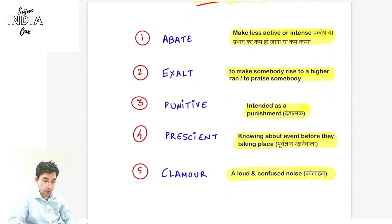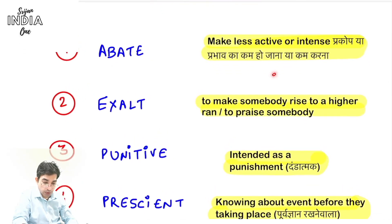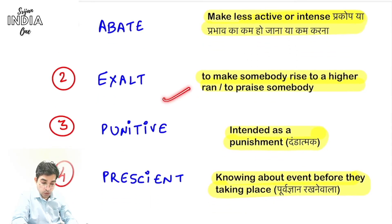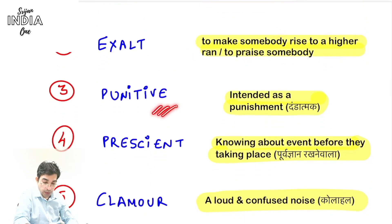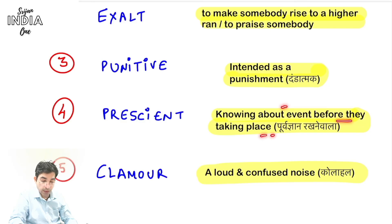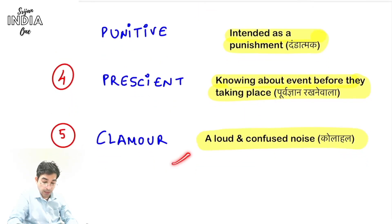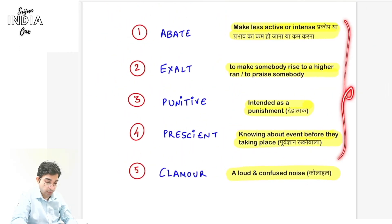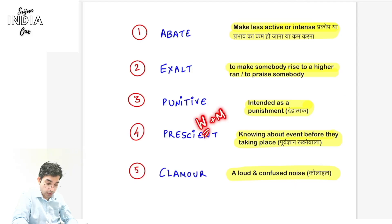Today's vocabulary: 'Abate' means to reduce the effect or intensity of something bad — make less active or intense. 'Exalt' means to praise someone or make them rise to a higher position. 'Punitive' means intended as a punishment — dandatmak. 'Prescient' means knowing about an event before it takes place. 'Clamor' means loud or confused noise — kolahal.